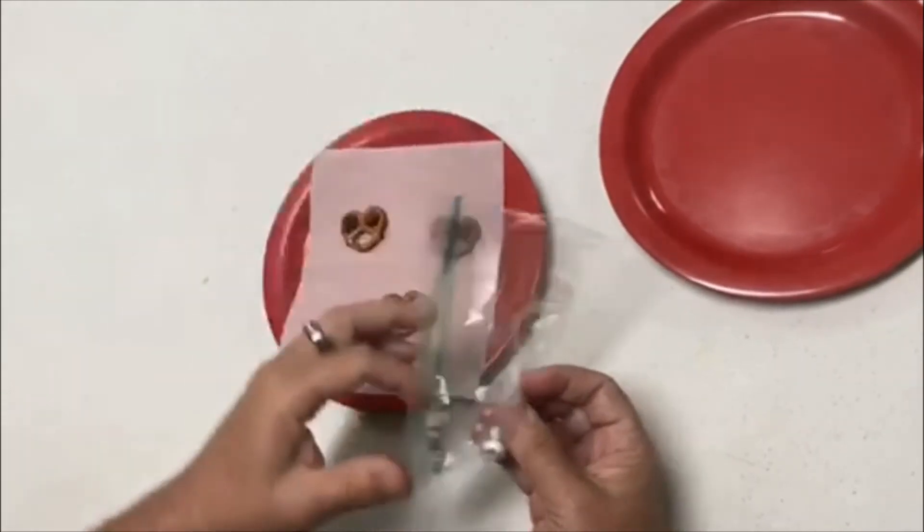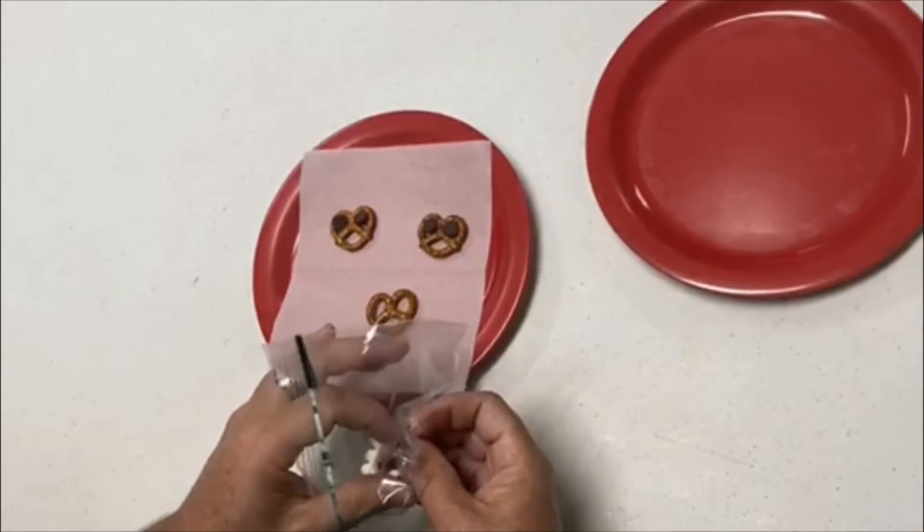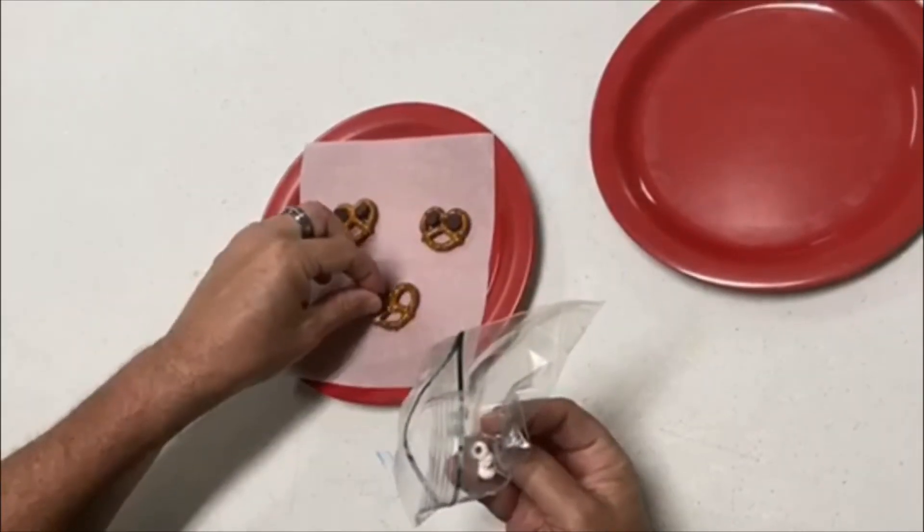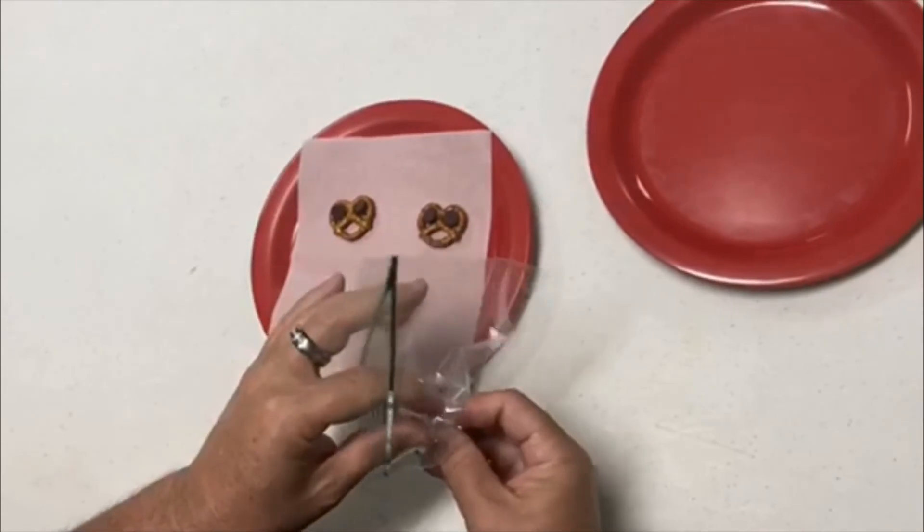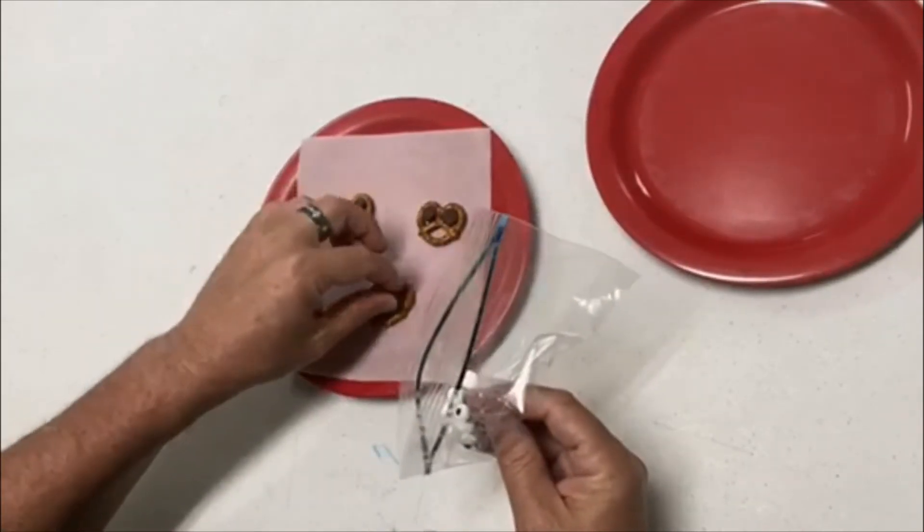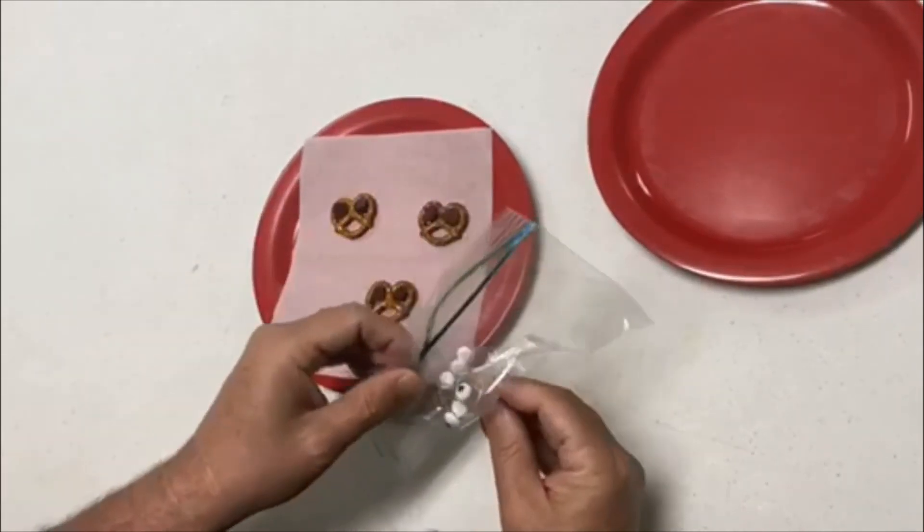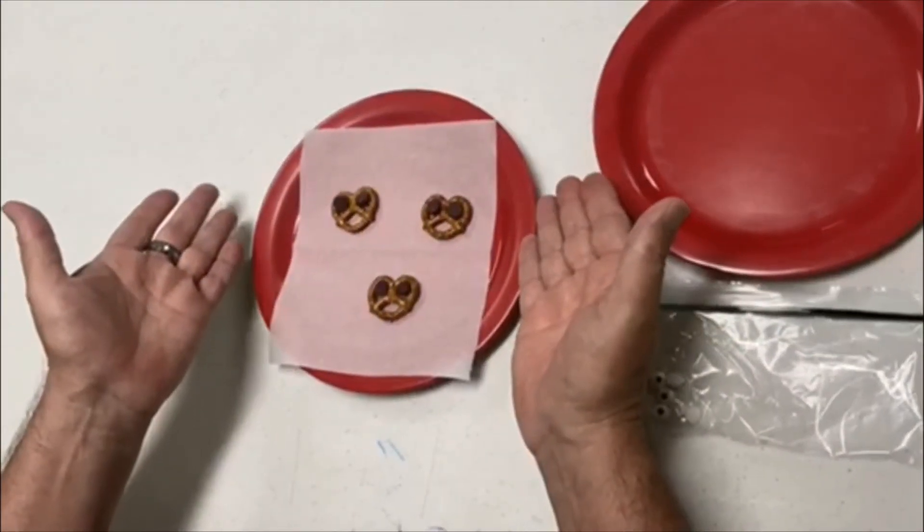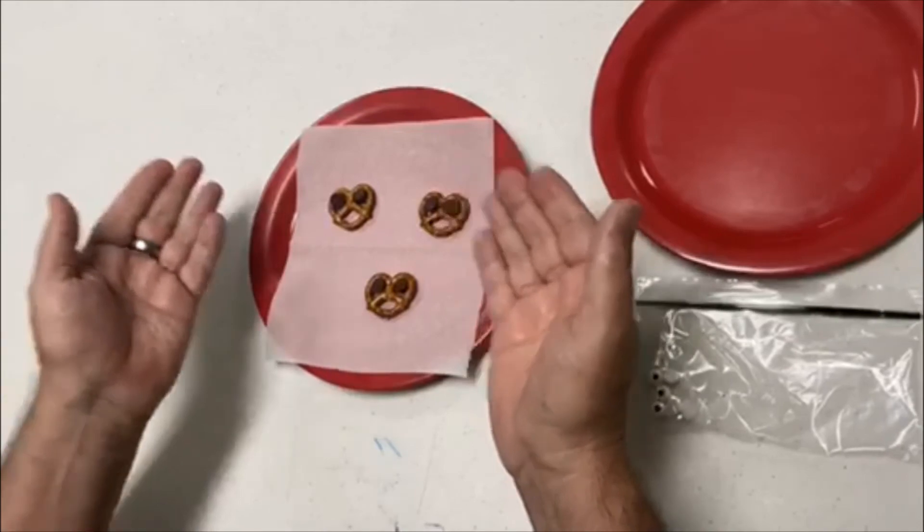Okay, put your little chocolate chip in there and two more. One chocolate chip here and one chocolate chip here. Then you're going to take this and either you or someone will help you put it in the microwave on high for 12 to 20 seconds.